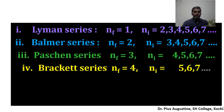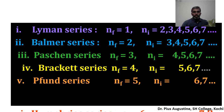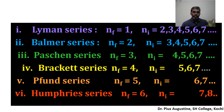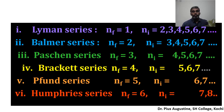Similarly you will get other series: Brackett series, Pfund series, and Humphreys series, each defined by their n_f and nᵢ values. These are the various series of wavelengths obtained in the hydrogen spectrum — all line spectra. Rutherford's atom model could not explain these lines; it predicted a continuous spectrum where all possible wavelengths are expected. But the hydrogen atom's spectrum is not continuous, which could not be explained with Rutherford's model, so Bohr introduced the quantum picture.